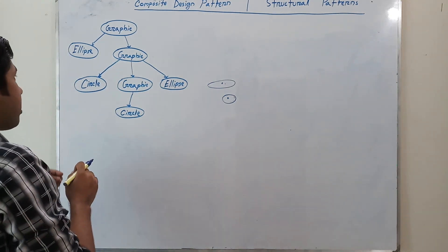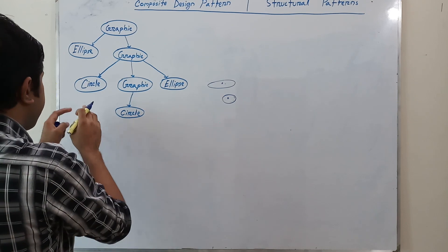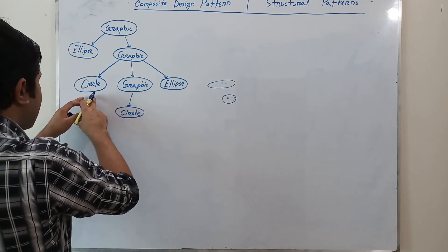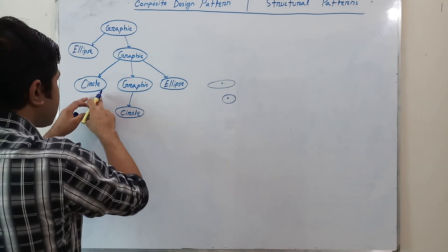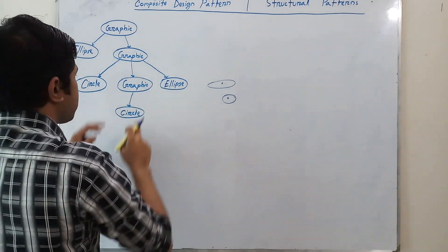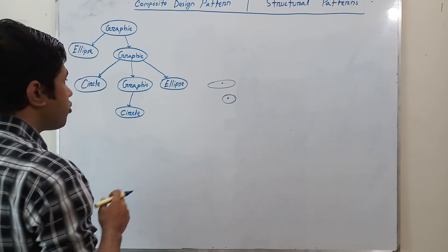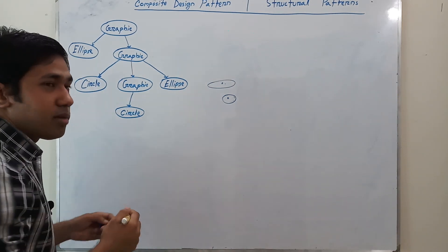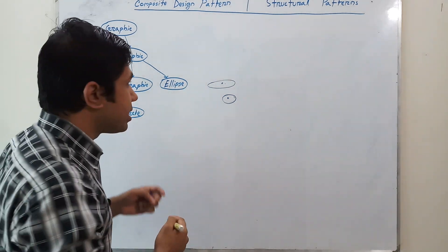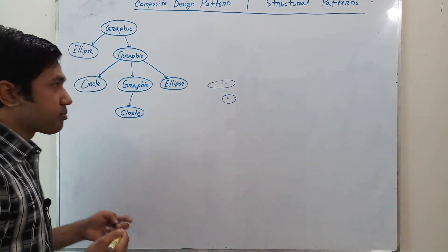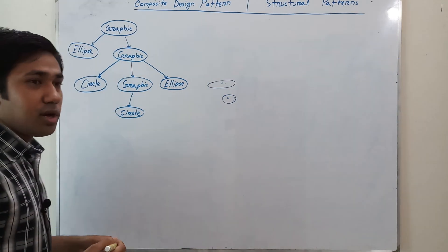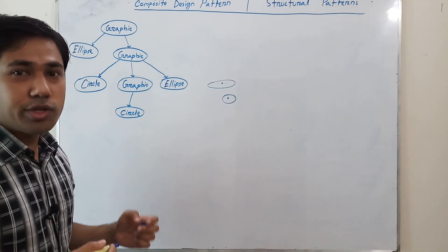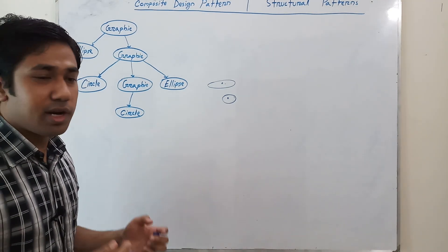So implementing the tree structure to represent the part-whole hierarchy is complex and also difficult. But if we can treat all the objects — all the leaf objects and also the composite objects — uniformly, then it will be easier to implement.